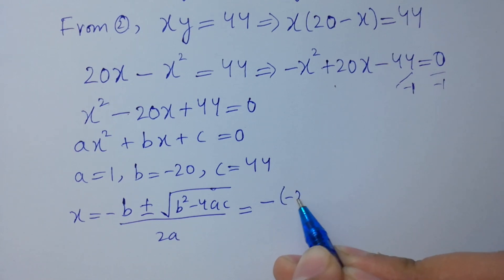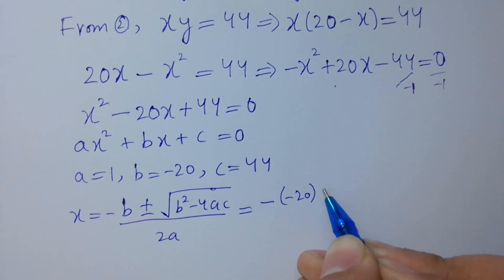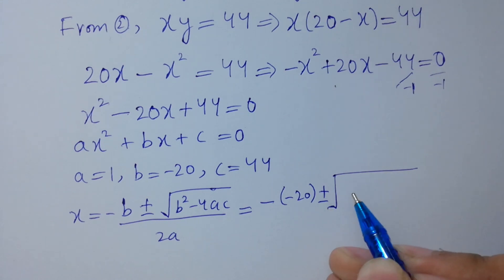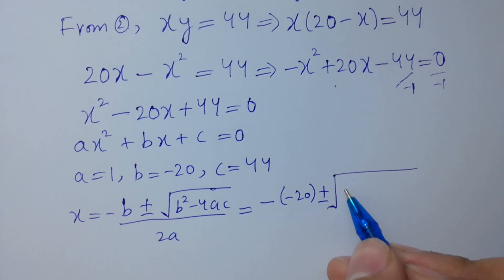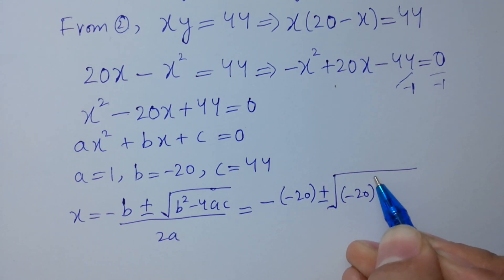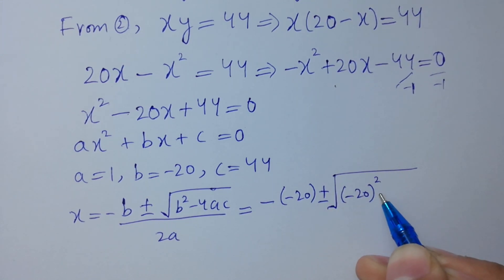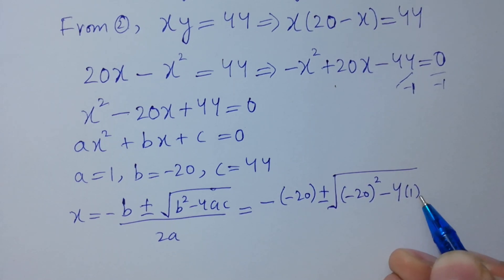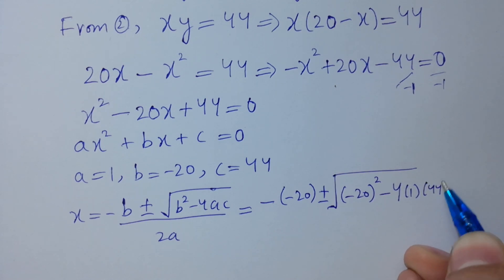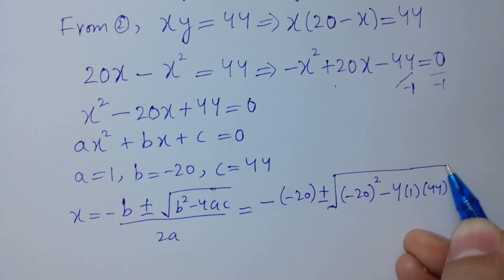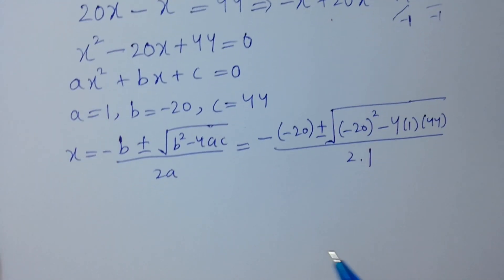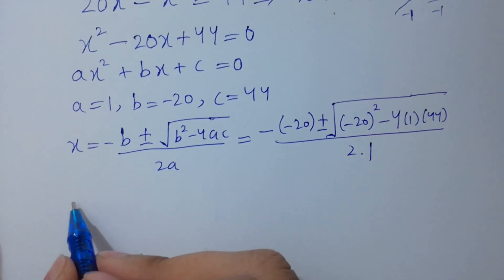b is minus 20, a is 1, and c is 44, over 2 times a which is 1. So x equals minus (minus 20) plus or minus square root of (minus 20) squared minus 4 times 1 times 44, over 2.